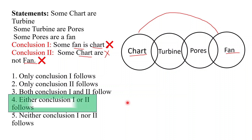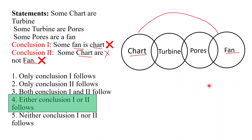We got the correct answer. These two circles were having no direct relation with each other, so any conclusion regarding these two circles will be wrong. Some fan is chart is wrong and some chart are not fan is also wrong because these two circles have no direct relation with each other.